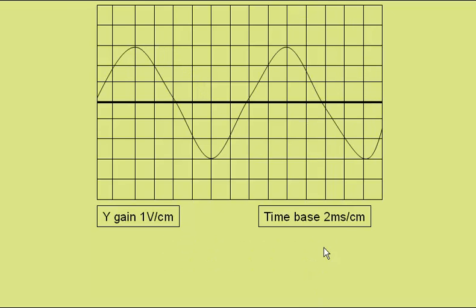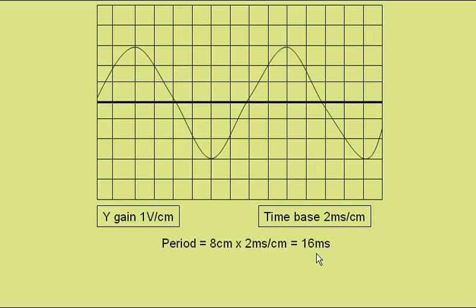Now the time base is 2 milliseconds per centimetre, and the period is 8 centimetres multiplied by 2 milliseconds per centimetre, giving a period of 16 milliseconds. Frequency is 1 over time period — 1 over 0.016 — or 62.5 hertz.